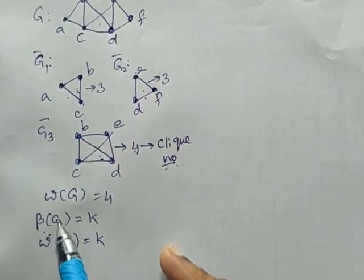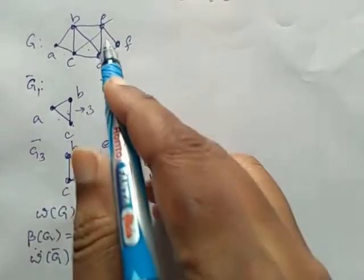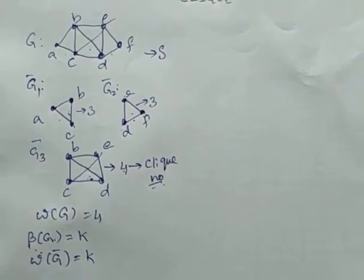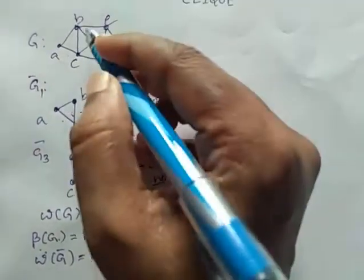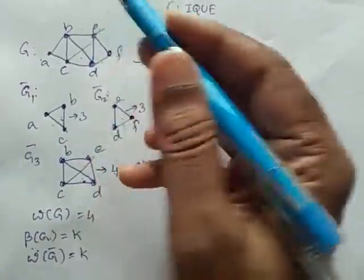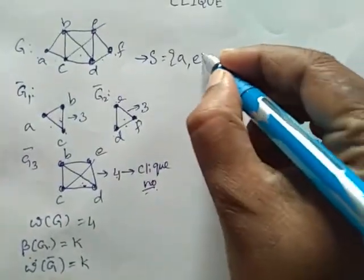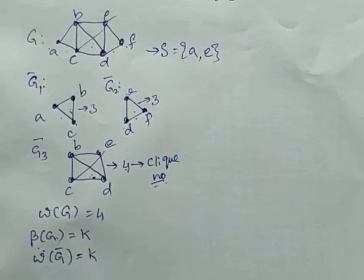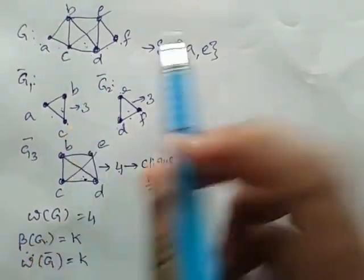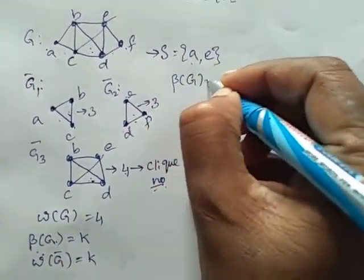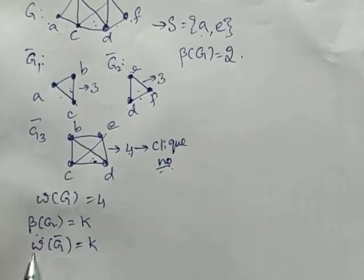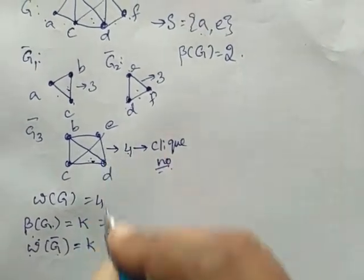If we consider an independent set S for G and take vertex A, then B and C are adjacent to A, so we take E; D is adjacent to E, F is also adjacent to E. Whatever way we consider, only two non-adjacent vertices exist in G, therefore β(G) is 2. Now the clique of G bar — the click of a subgraph — in this example K is 2.